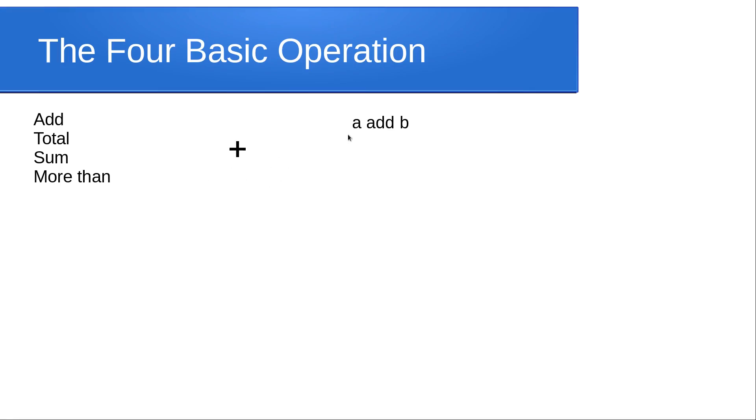So let's look at an example: A add B. How would we write that with mathematical notation? The total of A and B? The sum of A and B? B more than A? Well, this is where that lack of confusion comes in with mathematics, because they all mean exactly the same thing: A add B.